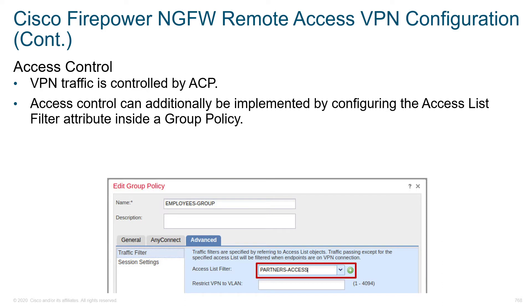Access control is managed by your access control policies. Access control can additionally be implemented by configuring ACL-based filters, which are set inside of the group policy. In this example, the ACL filter dropdown is set and references "partners access" — that's just the name of their ACL. This ACL is going to be applied to our VPN users.